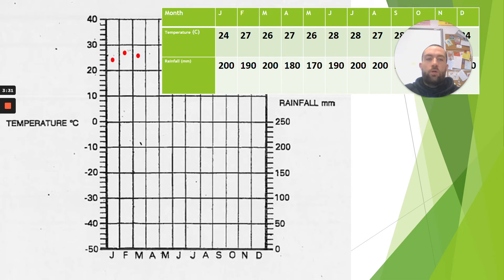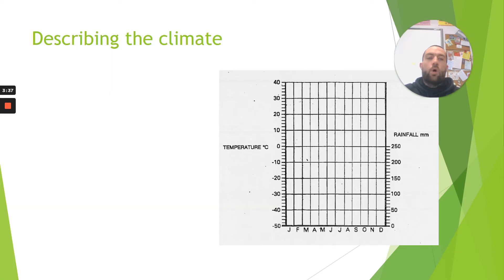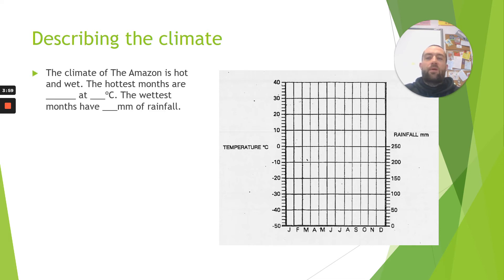All right, so to draw temperature you can draw the dots like that and then the bar graphs like that. So once you've completed your climate graph we are going to use the data from the graph to describe the climate of the rainforest. And describing is a great skill that we need throughout geography to see what something is and then we go on to explain why it happens.